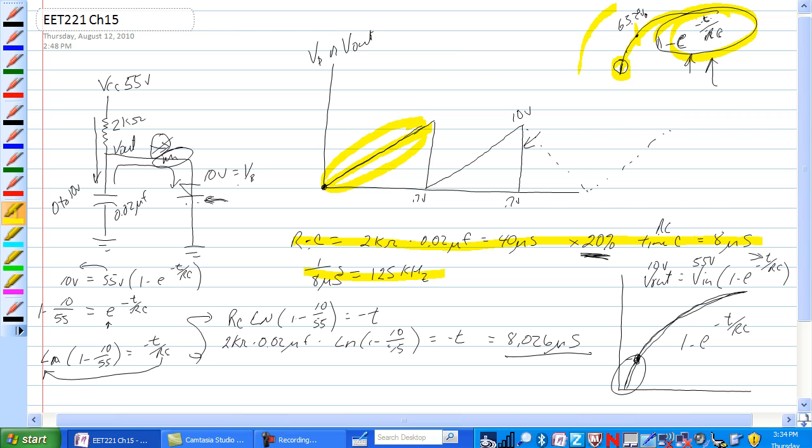Let me give you an example of how to pick RC. The formula we're dealing with is Vout is equal to Vin times 1 minus e to the minus t over RC.